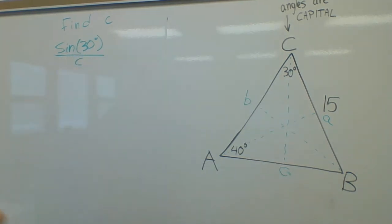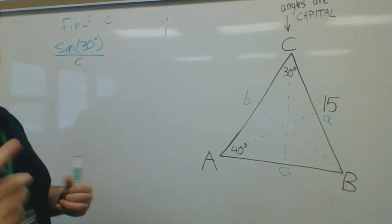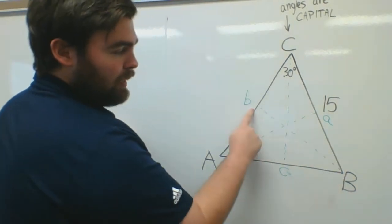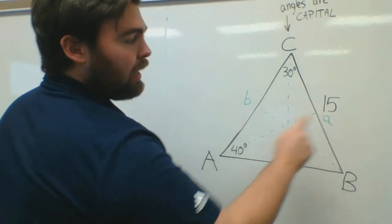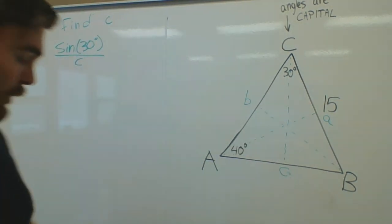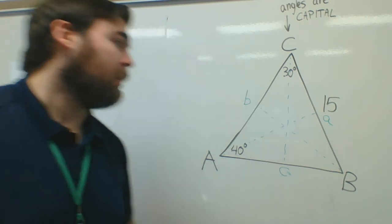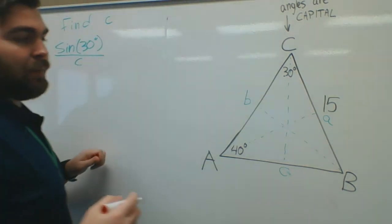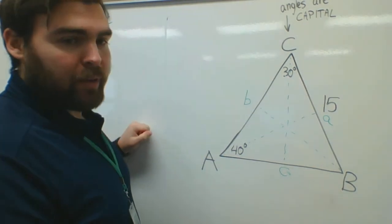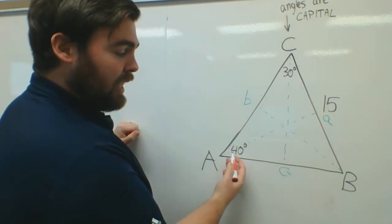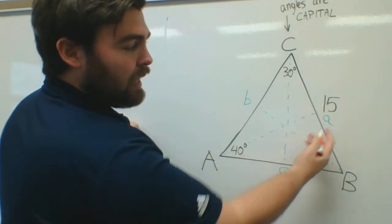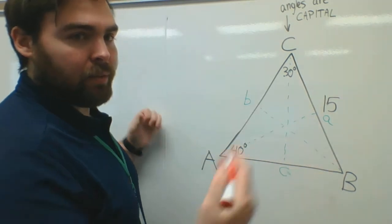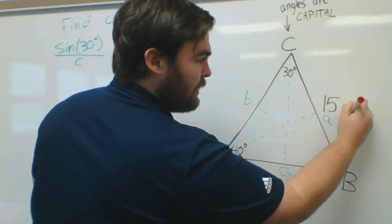Now, I'm going to set it equal to a different pair. Either sine of capital B over B or sine of capital A over A. The pair you do should always be something you have the most information about. So I have capital A, this is 40 degrees. I have lowercase a, this is 15. Whatever units, you want to call it inches. That's fine.